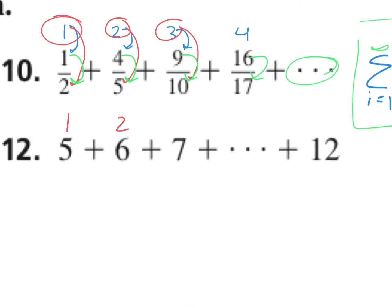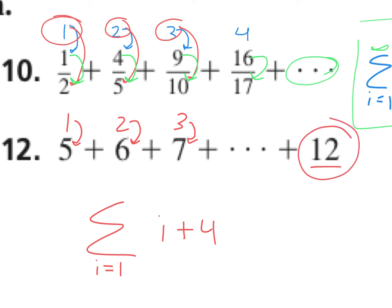For the next one, we have terms 1, 2, 3, and we need to find which term gives the last value. What do we do to get from 1 to 5? Add 4. Let's verify: 2 plus 4 is 6, 3 plus 4 is 7. So the equation is i plus 4. With i equals 1 at the bottom, what number would we add 4 to and get 12? 8 — so this is the 8th term. We put 8 on top.